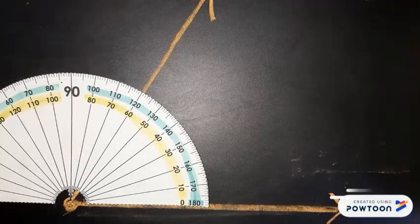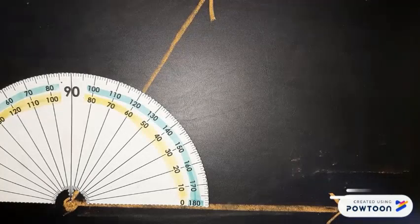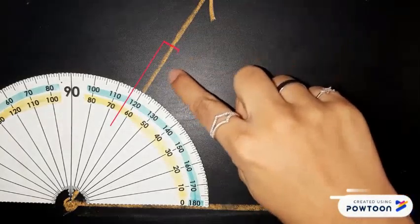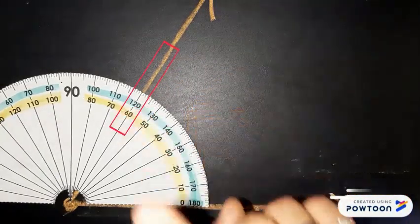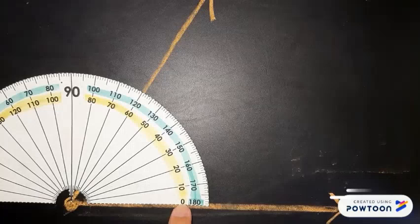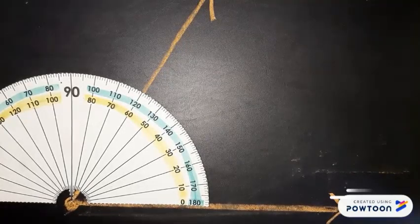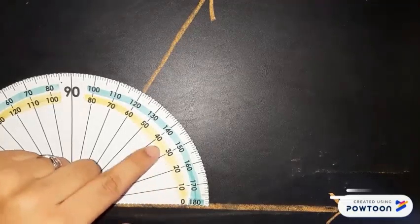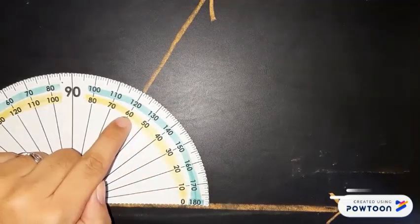Then we need to count from zero up to the place where the other line meets the protractor. Since we need to start counting from zero, we are going to use the lower row of the protractor. And as you can see, this angle measures 60 degrees.